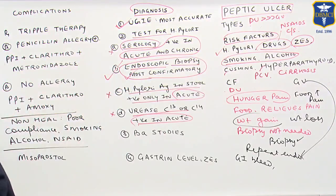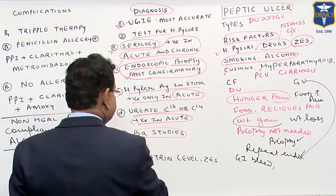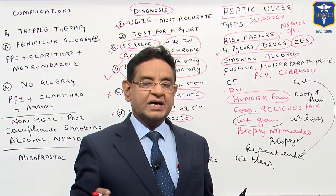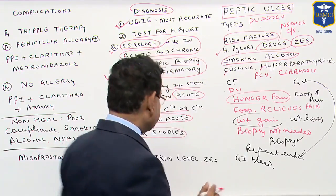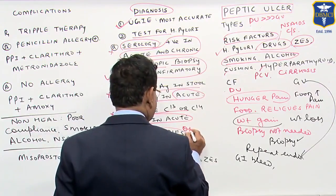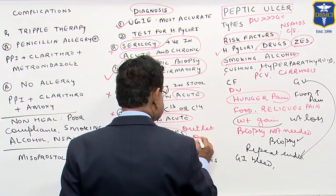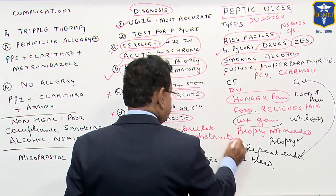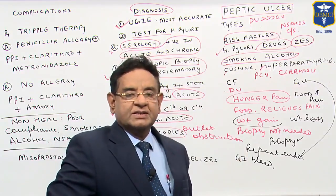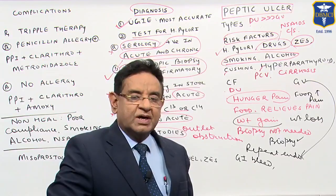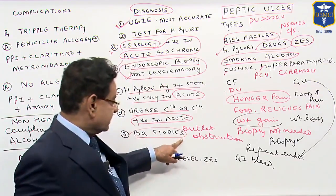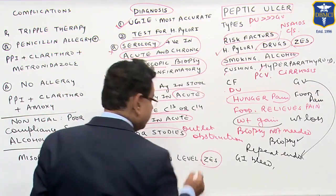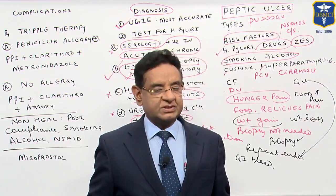We can also go for barium studies, but it will simply detect the ulcer. Barium studies are most valuable when gastric outlet obstruction is present — in fact, when we suspect gastric outlet obstruction, endoscopy is not much of use. Barium study is a better test compared to endoscopy in that case. We need to check gastrin level only when we are suspecting Zollinger-Ellison syndrome.